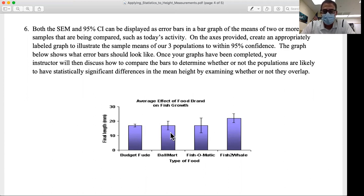then I can reasonably conclude that there is no statistically significant difference between the budget food and the Ballmart food in their effects on the final length of the fish we feed them to.